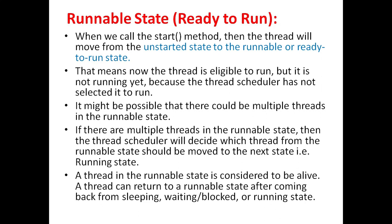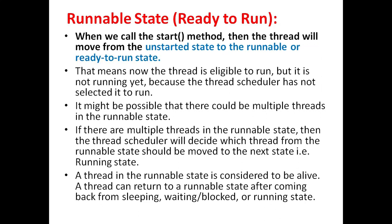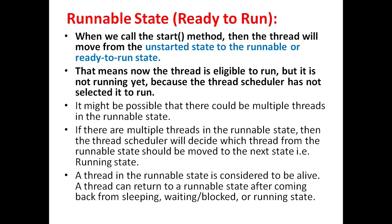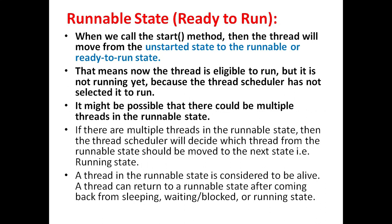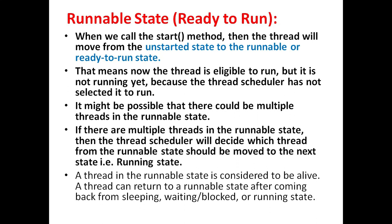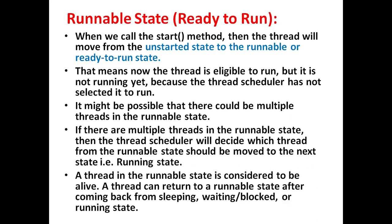Second is runnable state, that is ready-to-run. When we call the Start method, the thread will move from the unstarted state to the runnable or ready-to-run state. Now the thread is eligible to run but it is not running yet, because the thread scheduler has not selected it to run. There could be multiple threads in the runnable state, and the thread scheduler will decide which thread should be moved to the running state. A thread in the runnable state is considered to be alive.